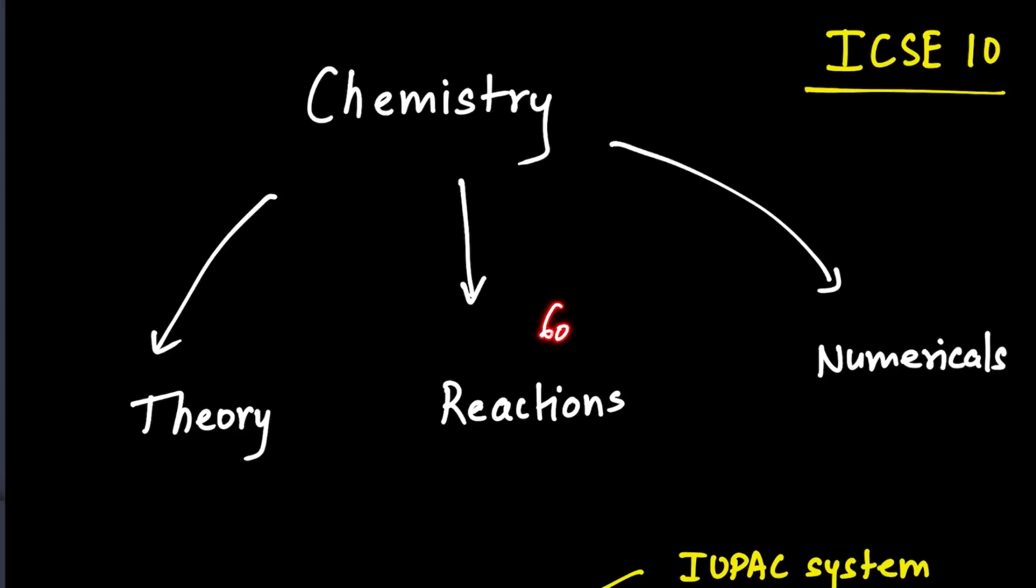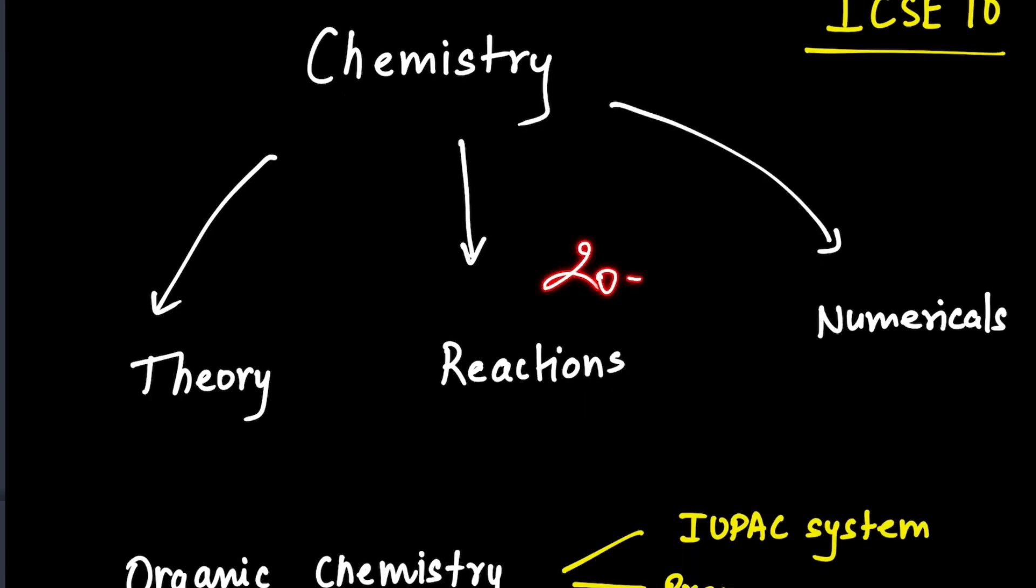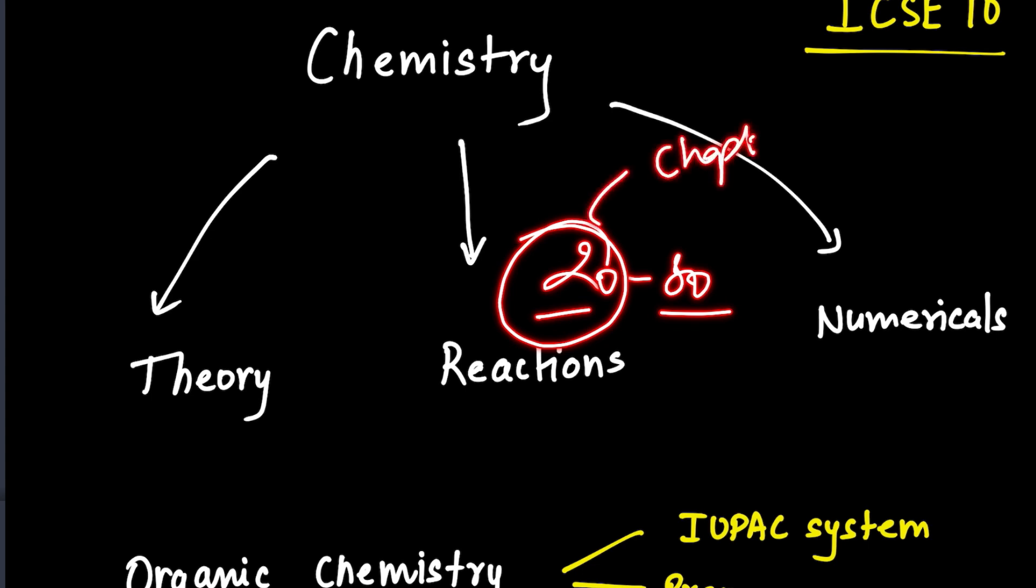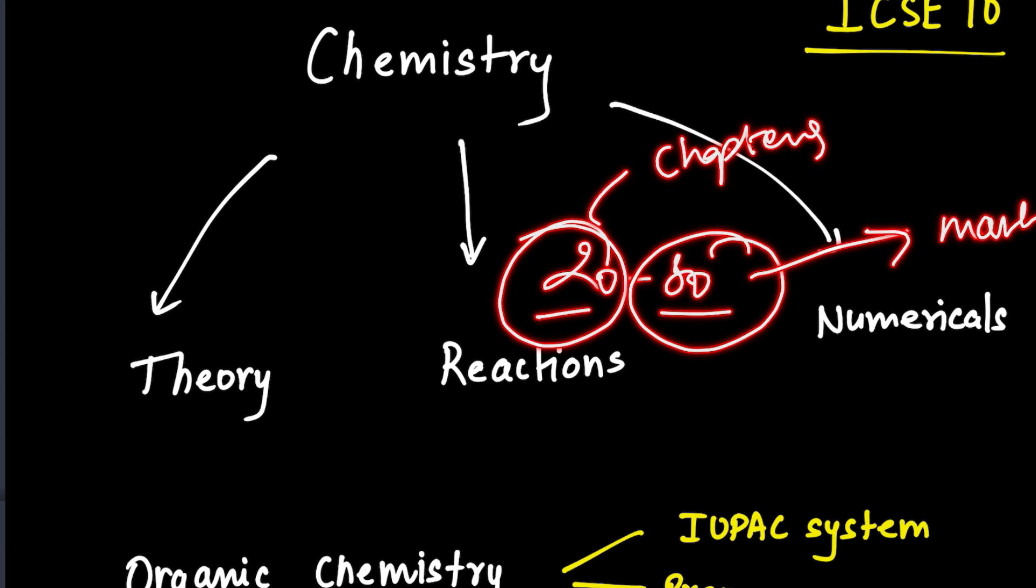For ICSE Chemistry, 60% of your questions are framed from theory, then 20% from reactions and 20% from numericals. I'll tell you the order of preference and what chapters you'll have to study first. I believe in this 20-80 rule: 20% of your chapters will help you score 80% of the marks. You'll have to study smartly.